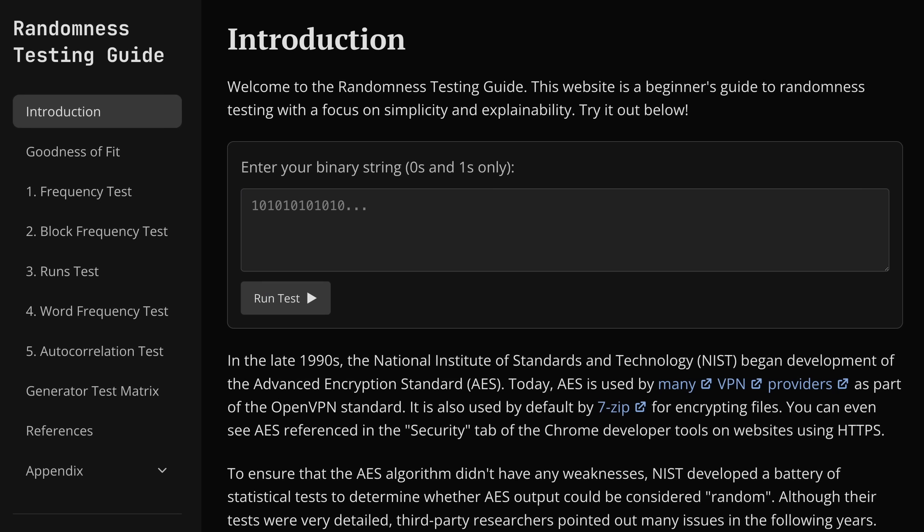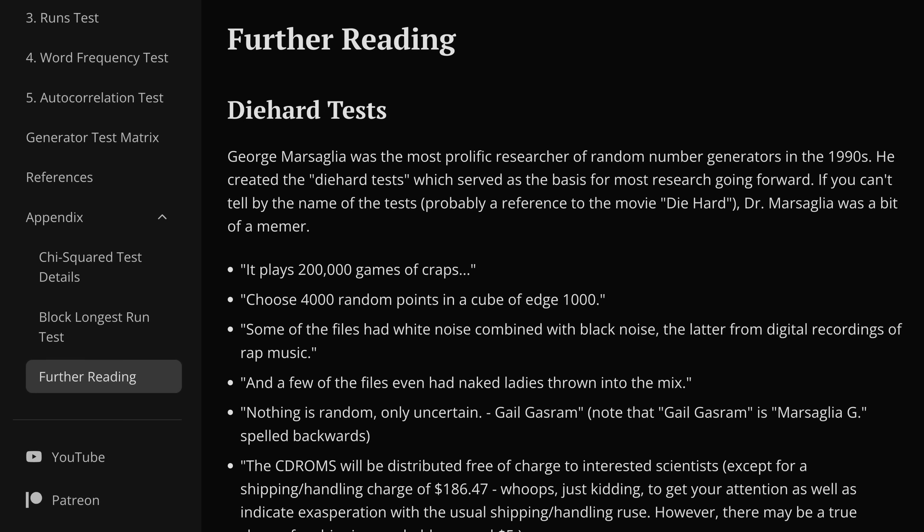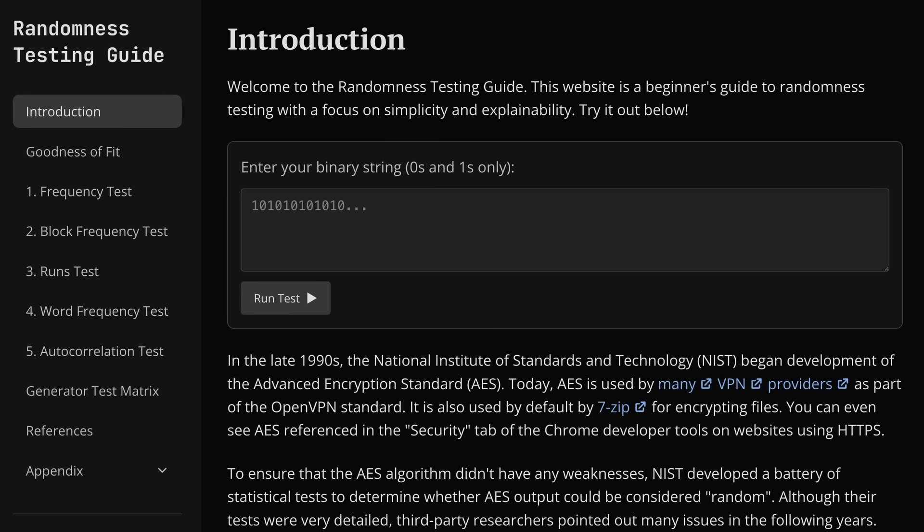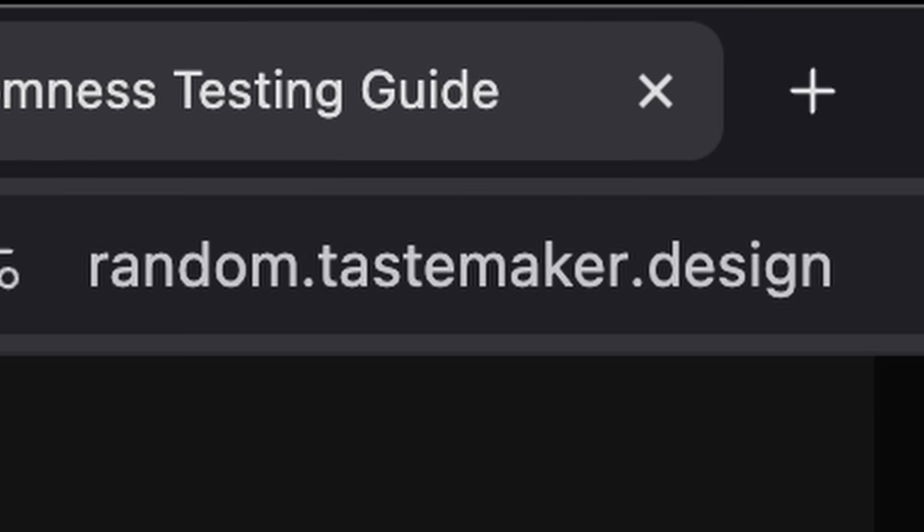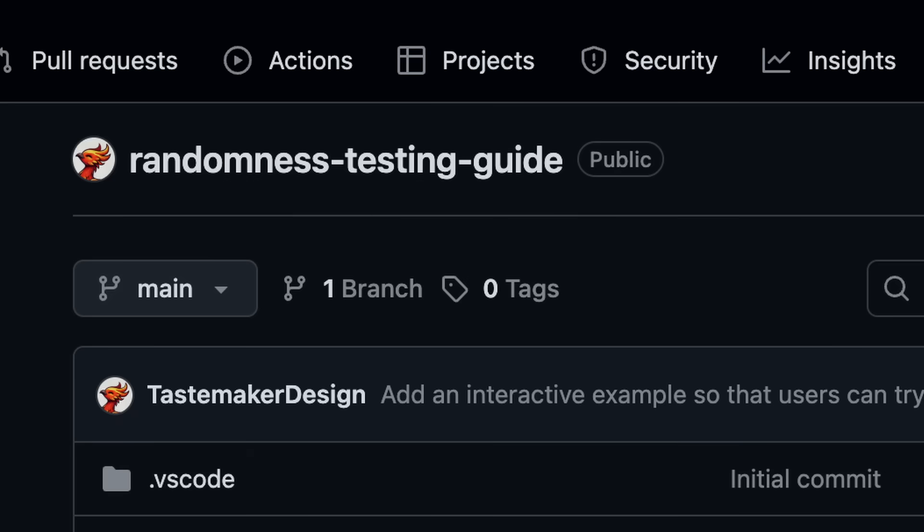The guide isn't a full rewrite of the NIST paper, and there's definitely a lot more research out there that I didn't cover. Think of this guide like a version zero of something much bigger. You can view the guide at random.tastemaker.design, and I'll include a link in the description. It's an open source project, so you can play around with it to make your own guides if that's something you'd like to do.